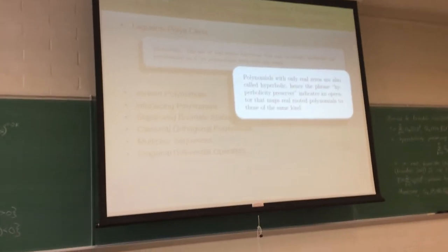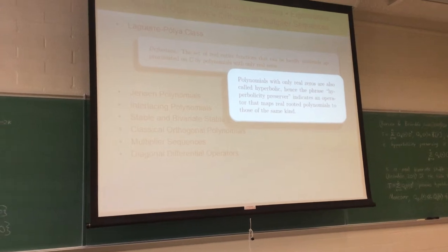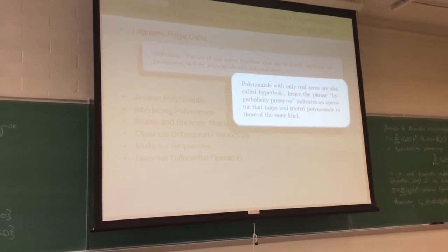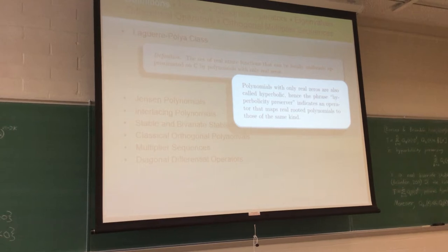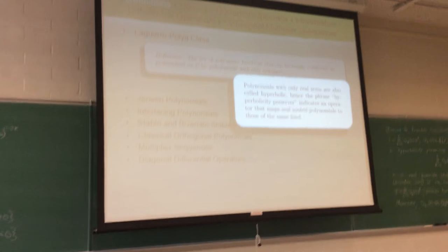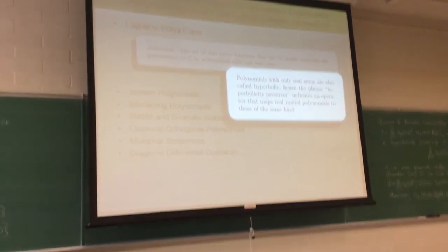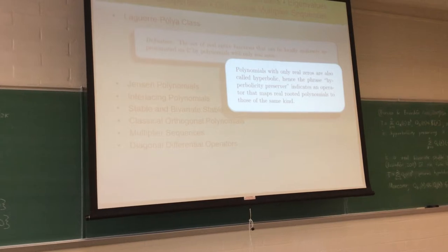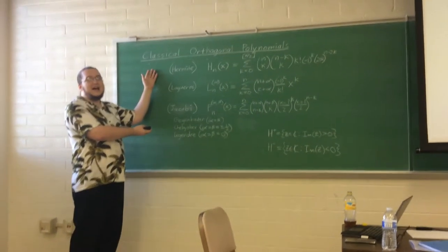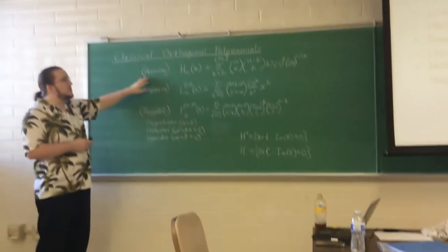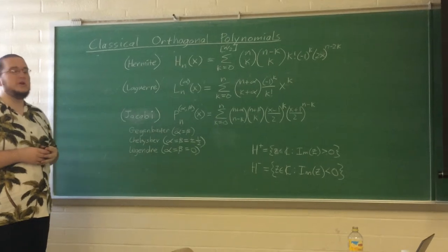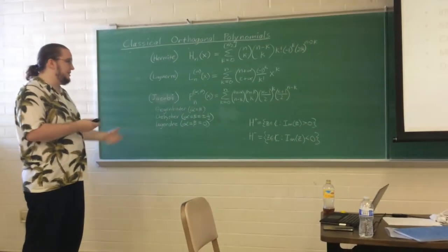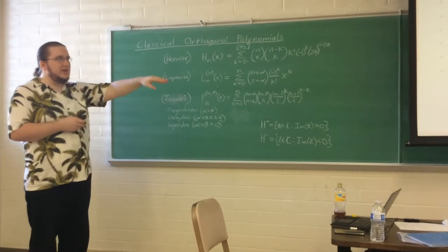Polynomials with only real zeros are typically called hyperbolic, and that's where the names come from. Hyperbolicity preservers are operators that map polynomials with only real zeros to more polynomials with only real zeros. Some of our favorite hyperbolic polynomials are the classic orthogonal polynomials — the Hermite, Laguerre, and Jacobi — which are among the most studied non-trivial polynomials with only real zeros.